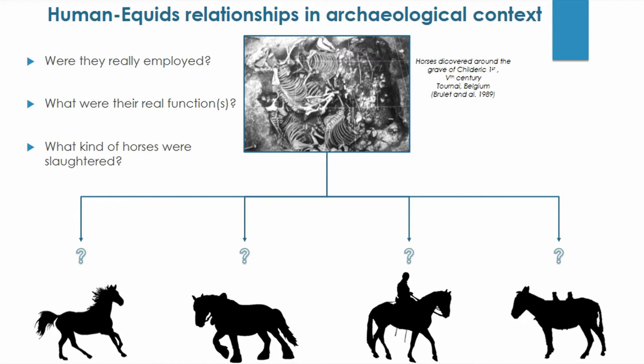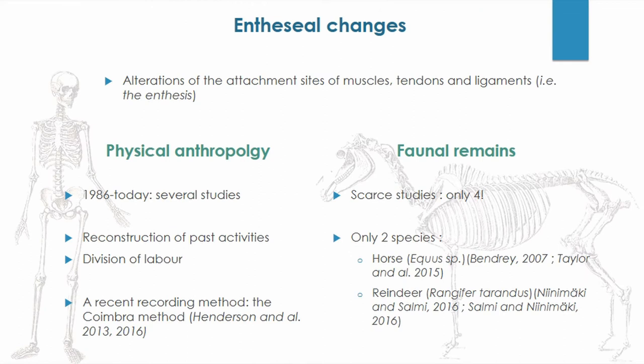In order to answer these questions, studies of musculoskeletal stress markers on faunal remains have increased in importance. They correspond to osseous changes that occur in response to internal or external factors. Among them are the enthesial changes, which correspond to bone modification of the attachment sites of musculoskeletal tendons and ligaments. After three decades since their initial study, they are widely used in physical anthropology for the reconstruction of economic activities, division of labor, and inference of life conditions in past societies.